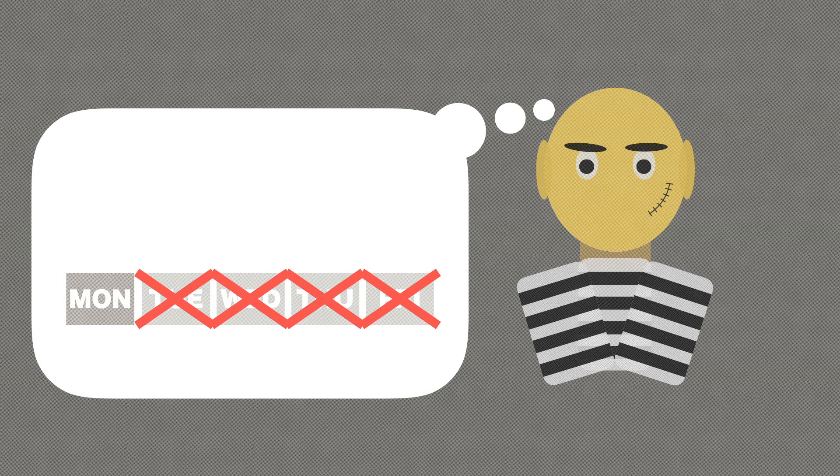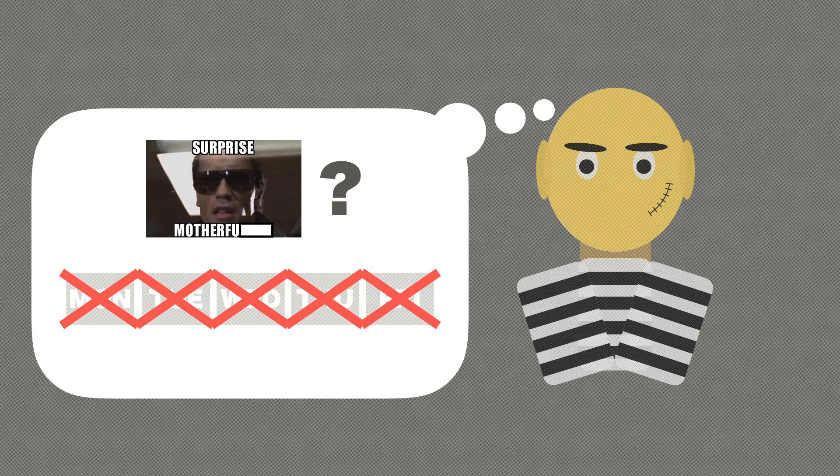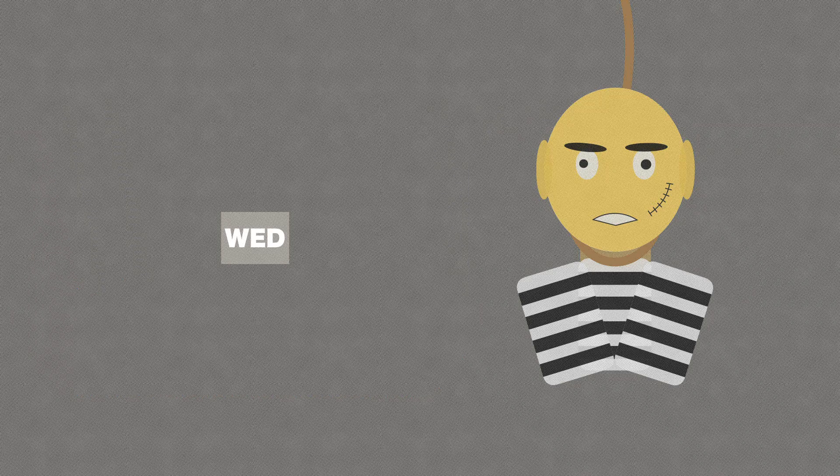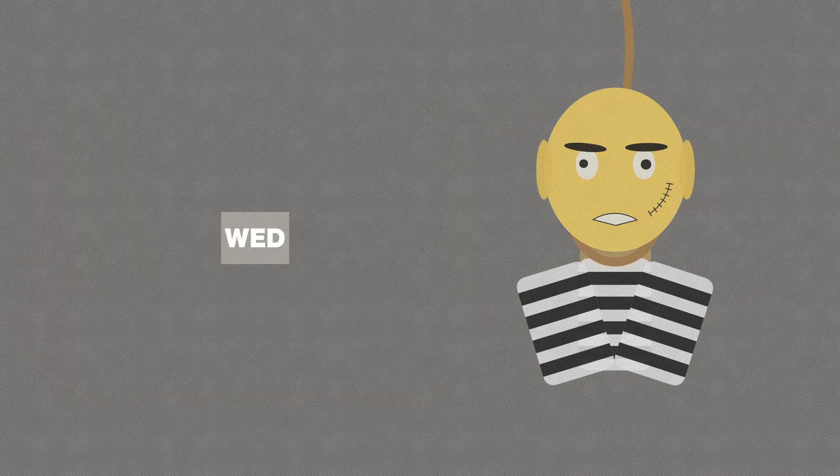He follows through with that logic and realizes that if they want to surprise him, then there is actually no day of the week that they can execute him. When he was executed on Wednesday, he was completely surprised.